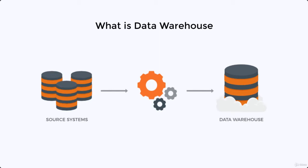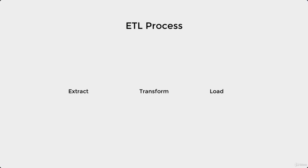Now, how a data warehouse basically works is through one particular principle called the ETL process. ETL stands for Extract, Transform, and Load. You have to understand this ETL process first, and then you will easily be able to understand how a data warehouse works.